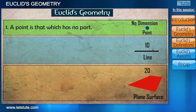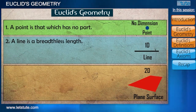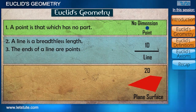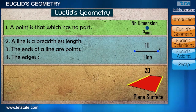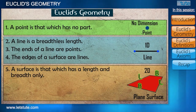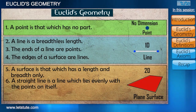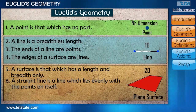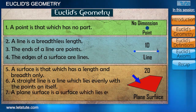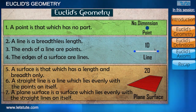A point is that which has no part. A line is a breadthless length — a line has only length and no breadth. The ends of a line are points. The edges of a surface are lines. A surface is that which has length and breadth only. A straight line is a line which lies evenly with the points on itself — meaning the points are evenly distributed on a line. A plane surface is a surface which lies evenly with the straight lines on itself — meaning lines are evenly distributed on a surface.